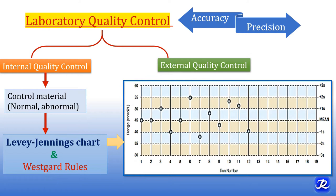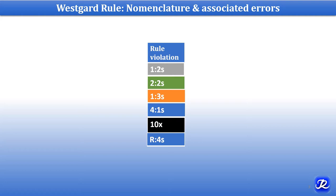A Levy-Jennings chart is a graphical method for displaying control results and evaluating whether a run is in control or out of control. Mean and standard deviations are required to construct this LJ chart, and daily values are plotted versus time. Westgard rules decide whether an analytical run is in control or out of control, and these rules can only be applied if quality control values are plotted within the range of mean ±3 standard deviations. There are various Westgard rules: 1-2S, 2-2S, 1-3S, 4-1S, 10X, and R4S.